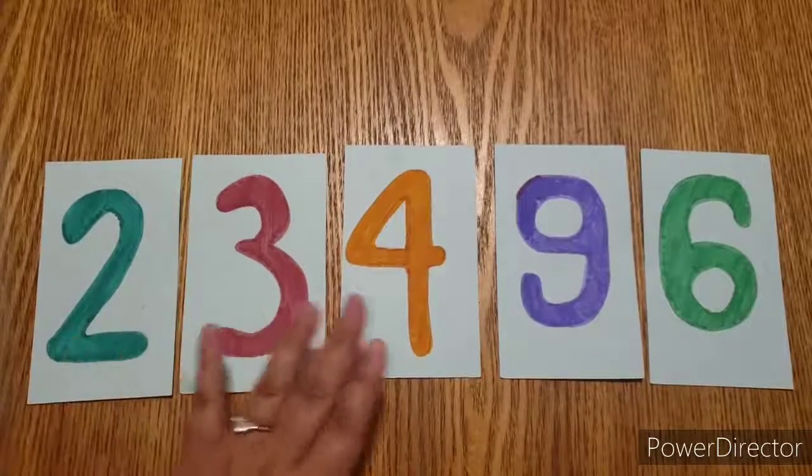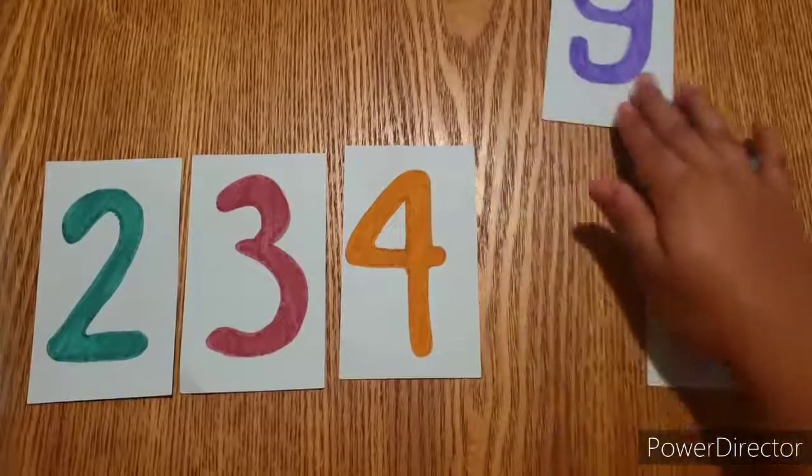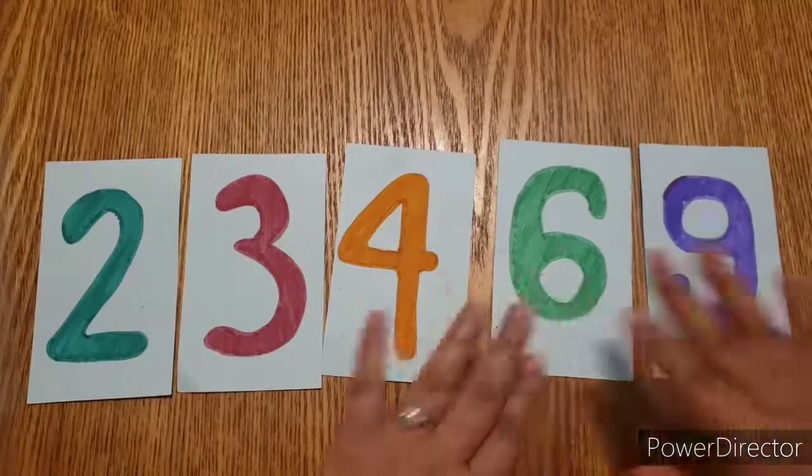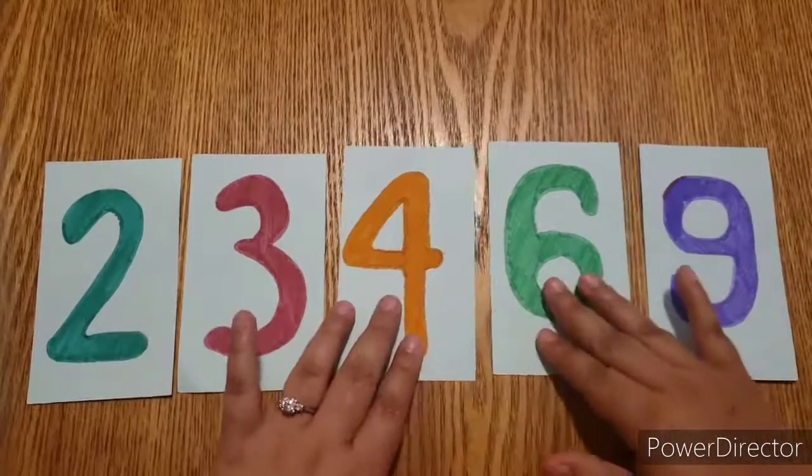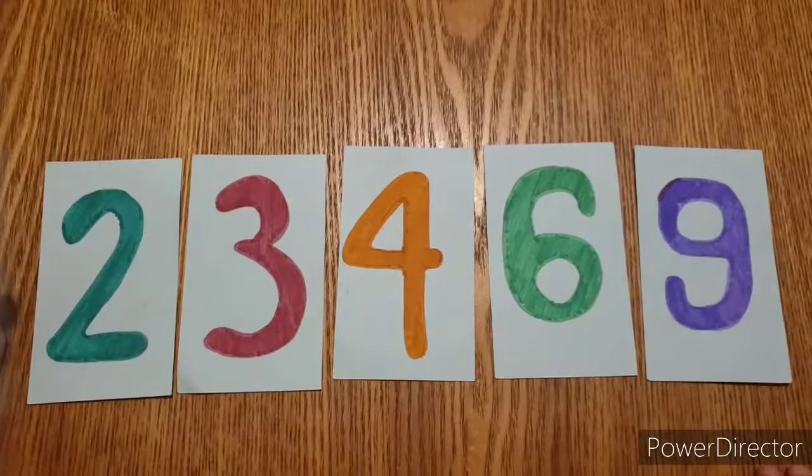2, 3, 4. What's next? Is it 9 or 6? It would be 6, because 9 is the greatest number from these. So this would be the order for least to greatest for these numbers.